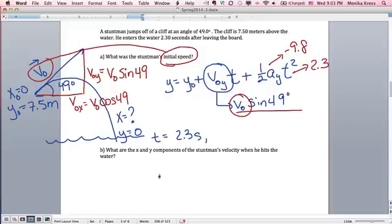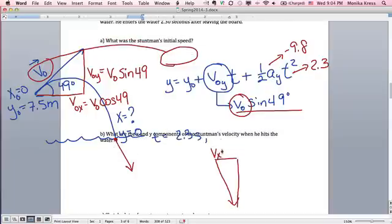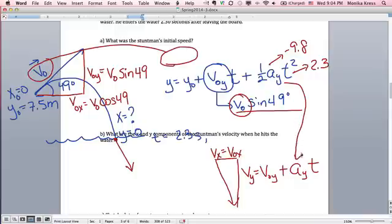And then likewise, for the x and y components of the stuntman's velocity when he hits the water, his velocity looks like this, a vector that has x and y components. vx is going to be the same as v0x. vy is going to equal v0y plus ay times t. And again, ay, as always with projectile motion, is negative 9.8. v0y is what you'd solve for here. And then you can find vy.